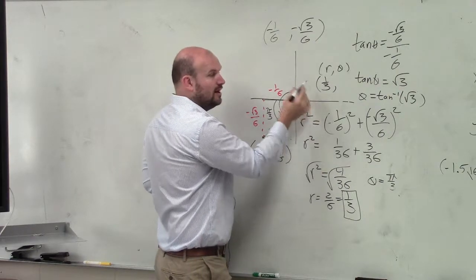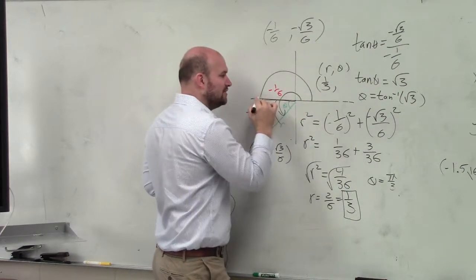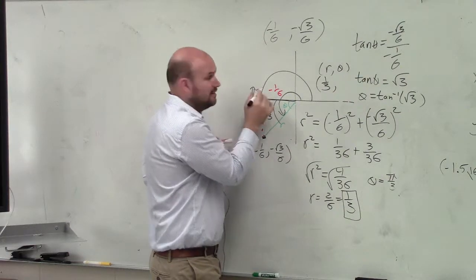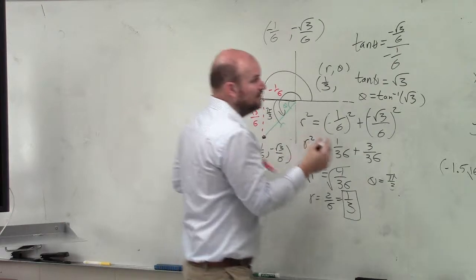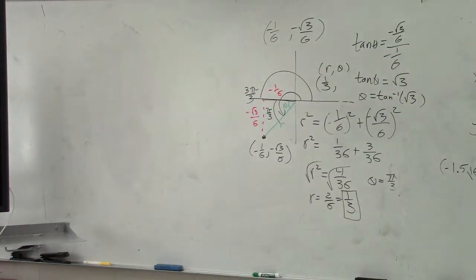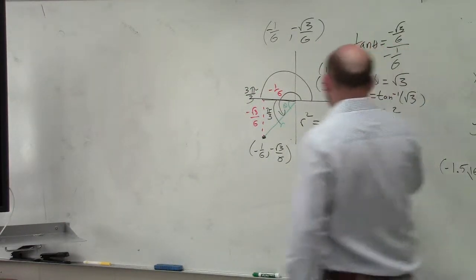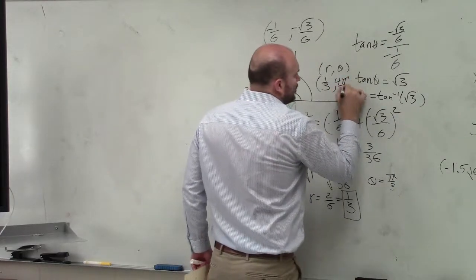Well, halfway around the circle is pi, or what over 3? 3 pi over 3. So if I go an extra pi over 3, I'm at 4 pi over 3. So therefore, my final answer is going to be 4 pi over 3.